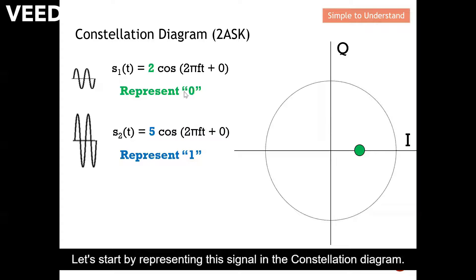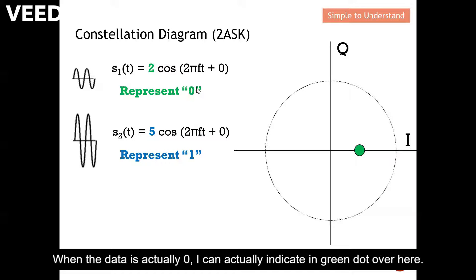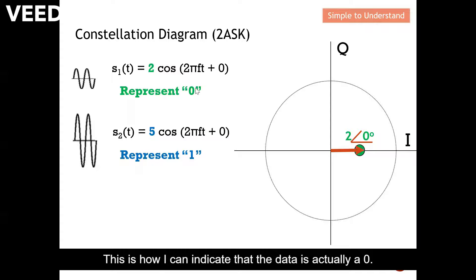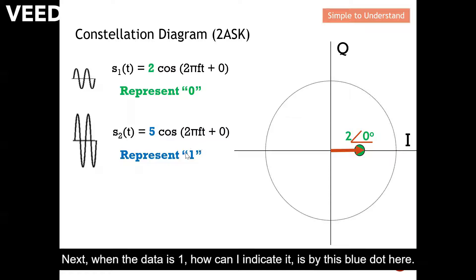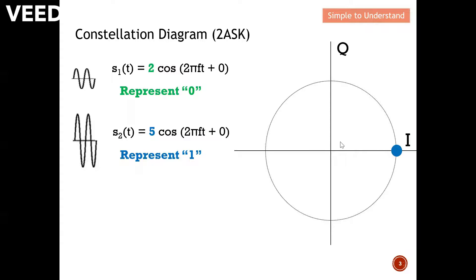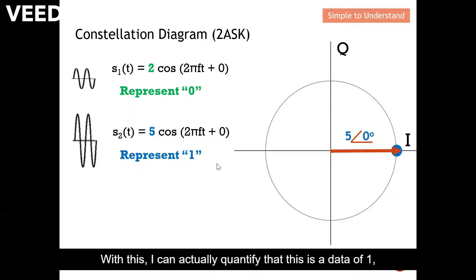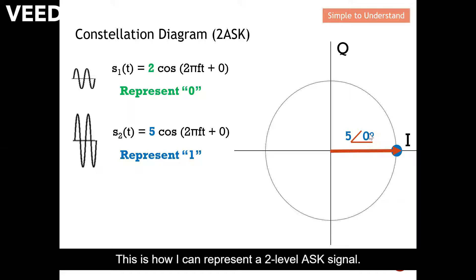Let's represent this signal in the constellation diagram. When the data is 0, I indicate it with a green dot. This dot position has a magnitude of 2 and a phase shift of 0. This is how I indicate that the data is 0. When the data is 1, it is indicated by the blue dot, having a magnitude of 5 and a phase shift of 0. This is how I represent a 2-level ASK signal.